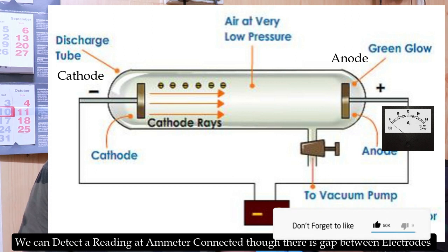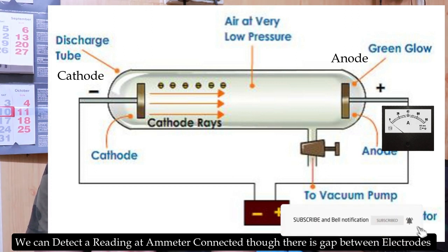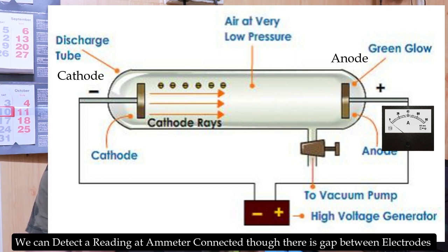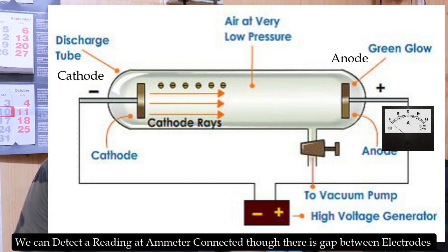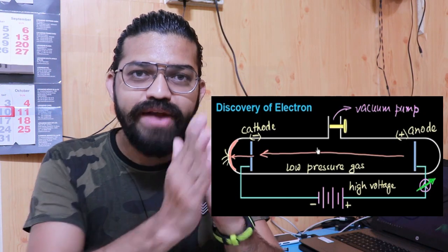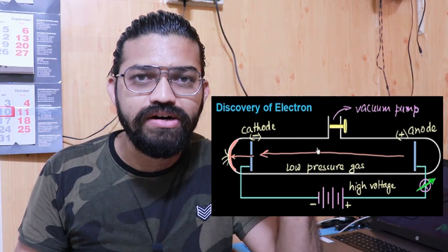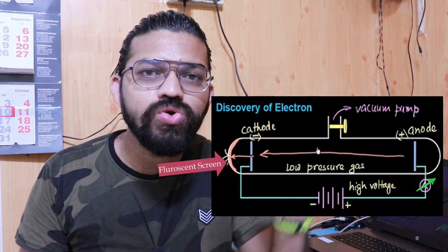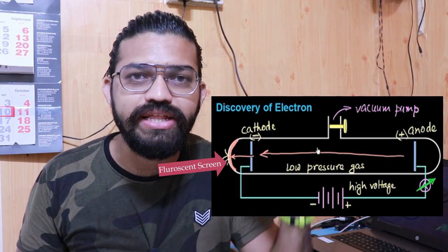J.J. Thomson realized that there is something flowing between these two electrodes. At that time, scientists didn't know whether the flow was from cathode to anode or from anode to cathode. To detect that particular flow, he drilled a hole in the plate at the cathode, and behind the cathode on the glass itself, he painted a fluorescence material — a fluorescence screen.